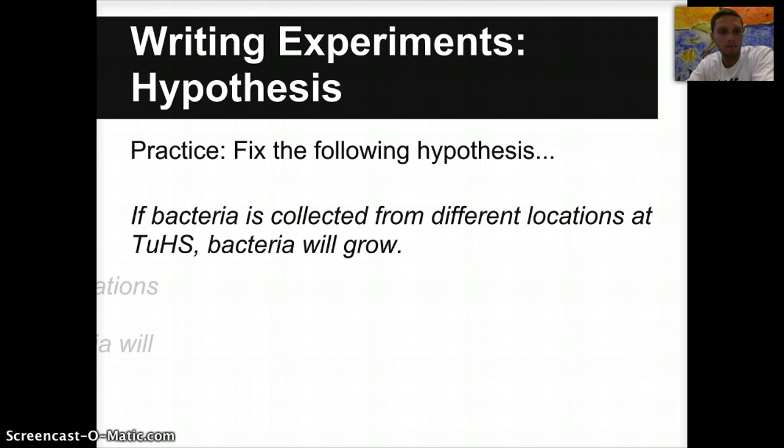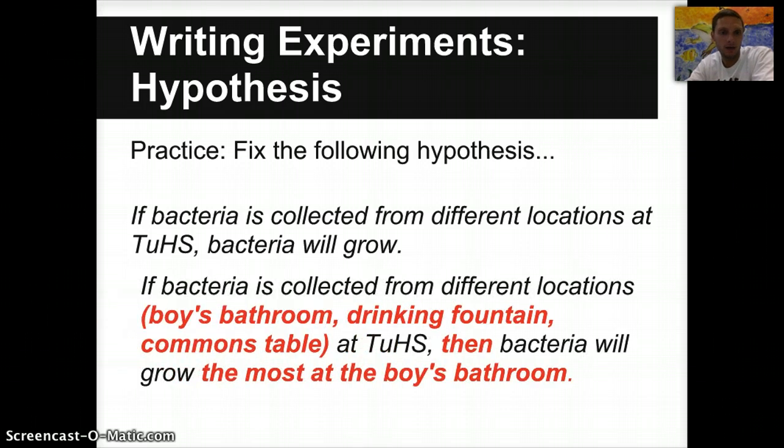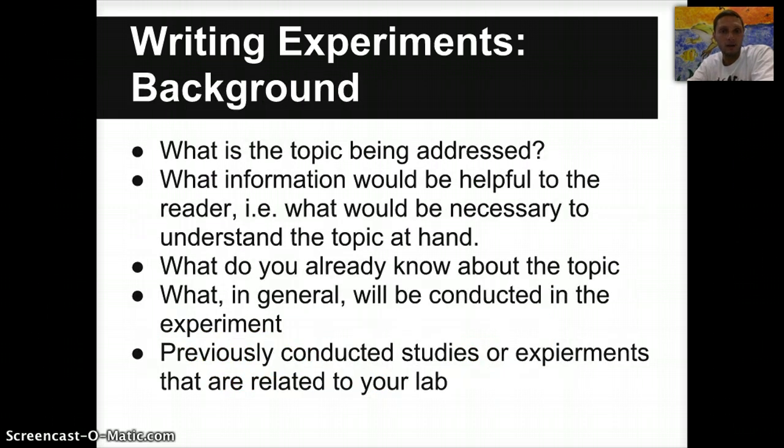So hopefully you had a chance to look at this one as well. And what I've got different on this one. There were no pronouns in this one, so that's great. If bacteria is collected from different locations, and in this example I've actually listed them out, making sure to be very specific. In this case we're looking at the boys' bathroom, a drinking fountain, and a commons table at Tualatin High School. Then, always want to have an if-then statement, then bacteria will grow the most at or in the boys' bathroom. And so this is a more specific prediction of what we think is going to happen, and where we think the most bacteria will grow. And this is something that we can actually measure by looking at and analyzing and seeing how much growth has actually occurred.